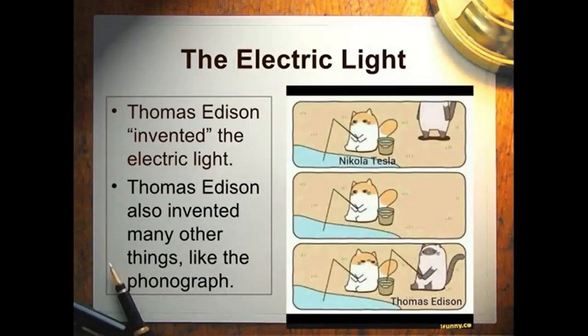The next thing we're going to talk about is the electric light. Thomas Edison quote-unquote invented the electric light, but he didn't — that's fake news. He was a good inventor, but the electric light was not really one of his. You may have heard the quote: 'I didn't fail at making the light a thousand times — I found a thousand ways not to do it.' The idea is that failure is just success at finding a way not to do something, except Edison didn't even do that. He just read about how other people couldn't figure it out and built on that.